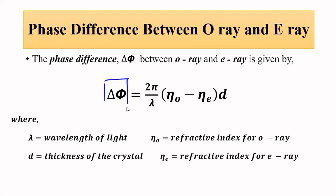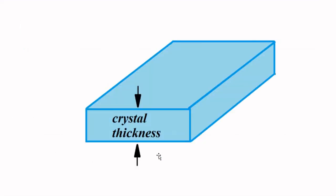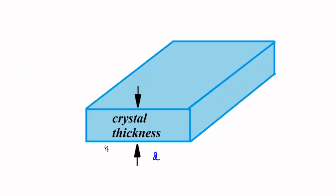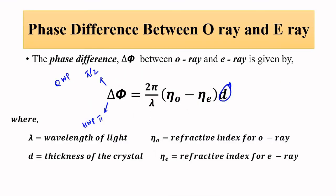By controlling the crystal thickness, we change the phase difference between the two rays. We have two types of wave plates: when the phase difference is π/2 it is a quarter wave plate, and when it is π it is a half wave plate. This is the basic principle of the wave plate method, which is a slight modification of the double refraction or birefringence method of modulation of light. I hope you like this video — please subscribe to Engineering Tutorial for more videos on engineering, science, and technology.